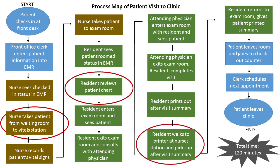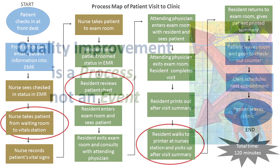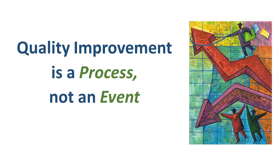Printers could be located closer to or in the exam room, or the information could be sent electronically to the patient if the EMR allows for it and the family elects this method of receiving the visit summary. Remember that quality improvement is a process, not an event. A process flowchart helps a team map out steps and activities and identify those that result in waste and do not add value to patients.